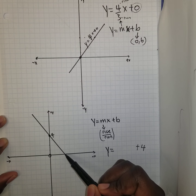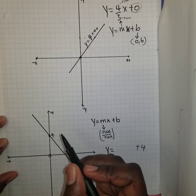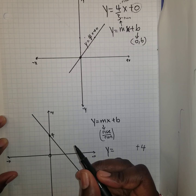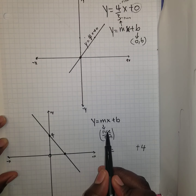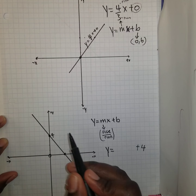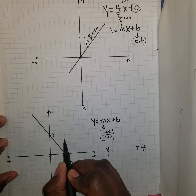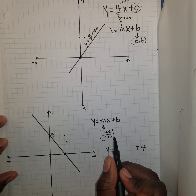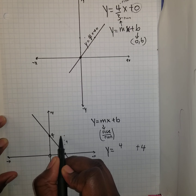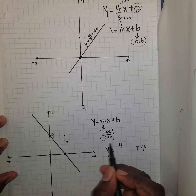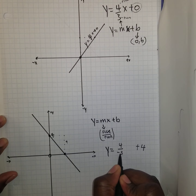We can choose any two points on this line to give us our slope. I'm going to choose this point and this point. Remember, this is going to be rise over run. From this point, I go up 1, 2, 3, 4 — so the rise is 4. For the run: 1, 2, 3 — and it would be in the negative direction, so the run is negative 3.